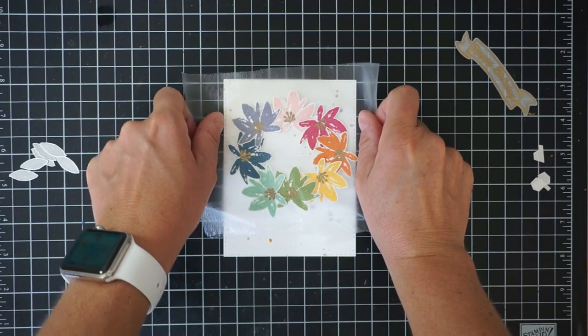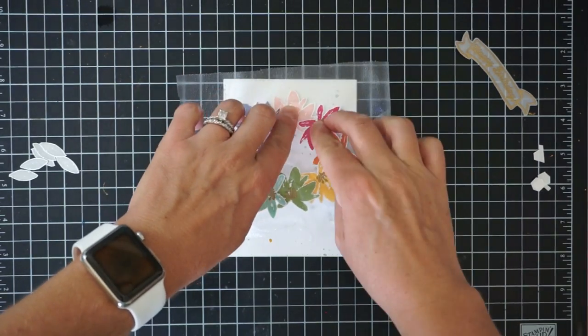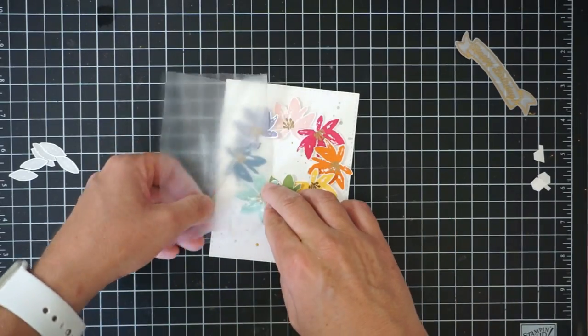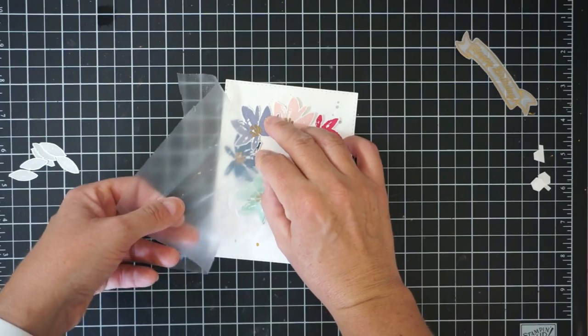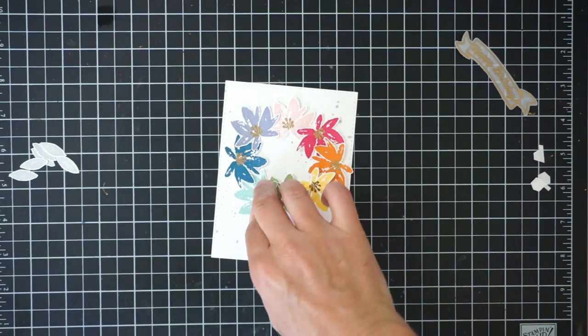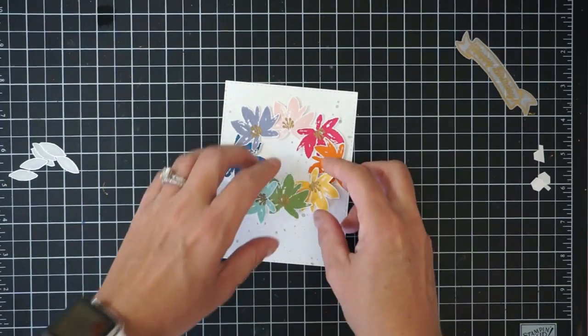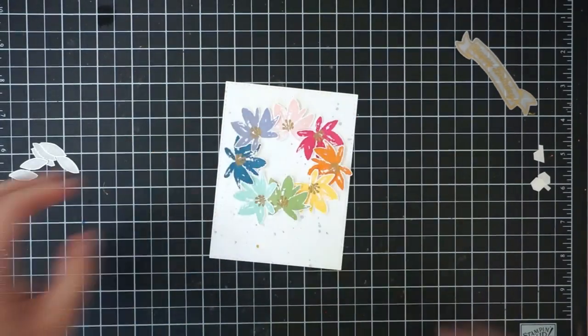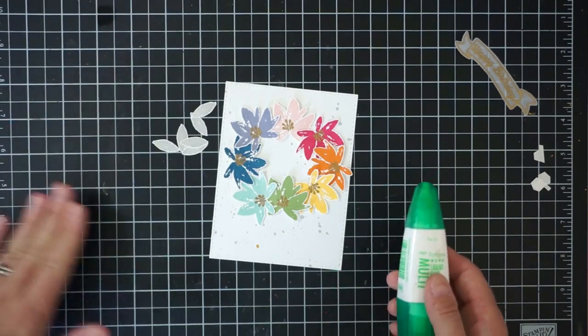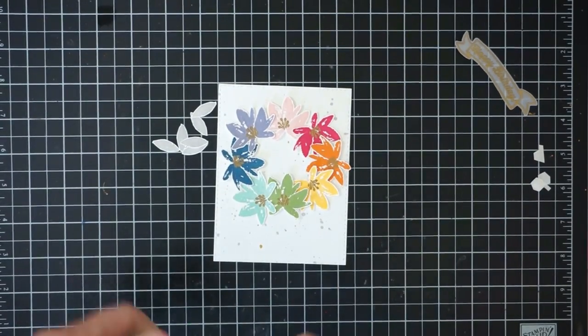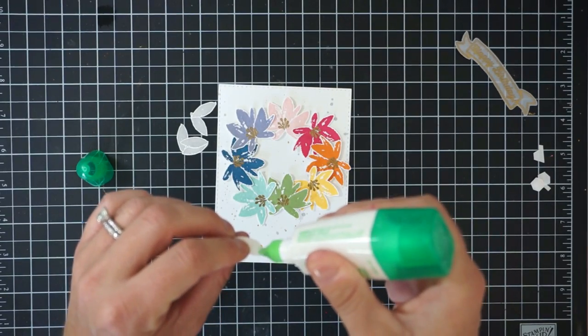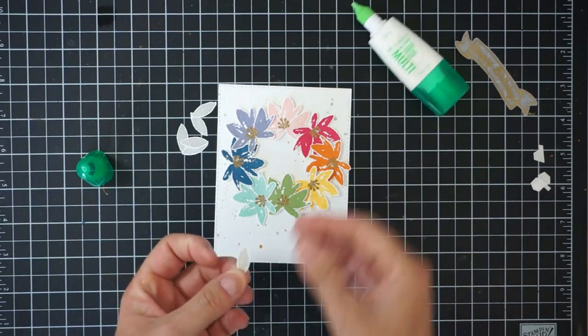I'll press this whole wreath down onto my card front and then carefully remove the press and seal. This is some pretty sticky stuff so you want to take your time removing it so it doesn't rip your paper. Once I have the wreath all situated, I'm just going to use some more of that Tombow multi-purpose glue to adhere the little leaves around this wreath. I really cannot talk this morning, I think I need some more coffee.